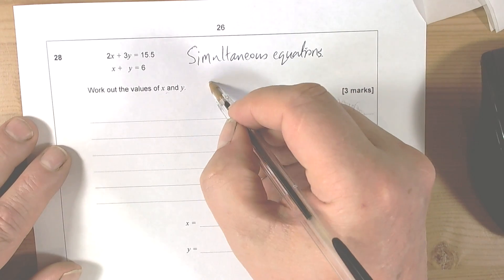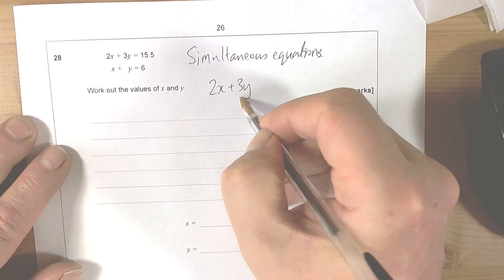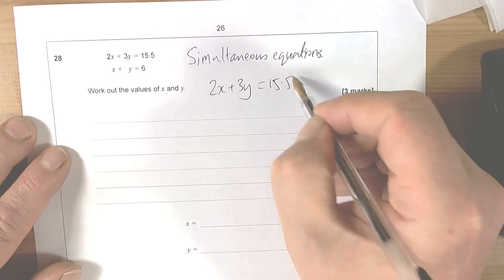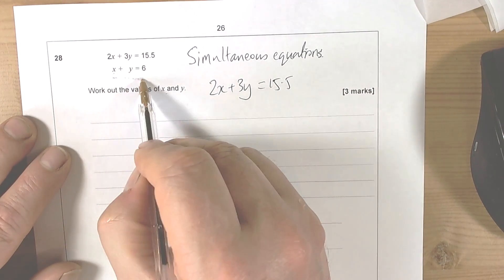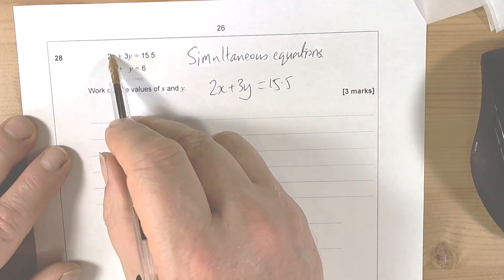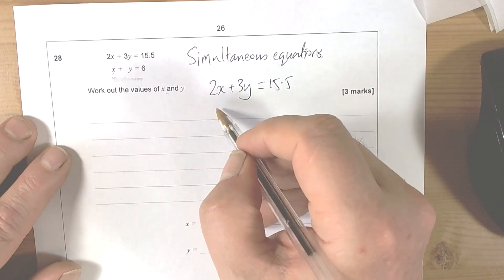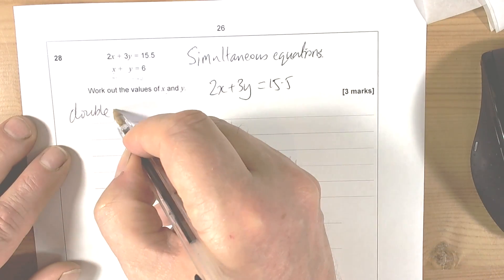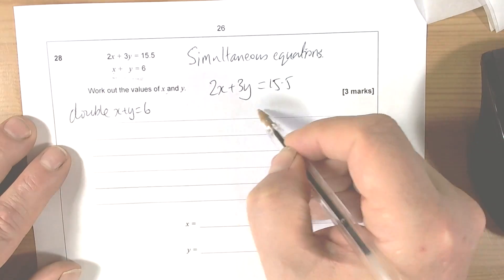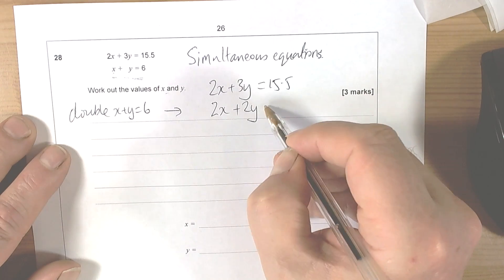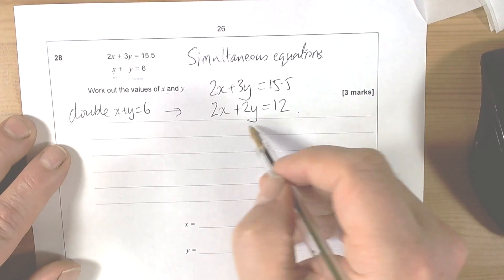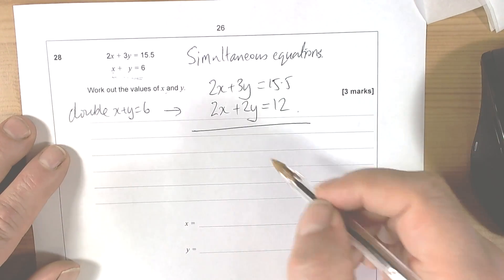2x plus 3y equals 15 and a half. If I double the bottom one, then I can say that both of those will have 2x in. So I'm going to double the bottom equation: double x plus y equals 6, so that gives me 2x plus 2y equals 12. I'm now in a position to subtract the equations.